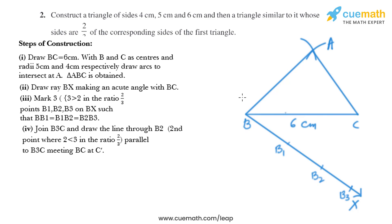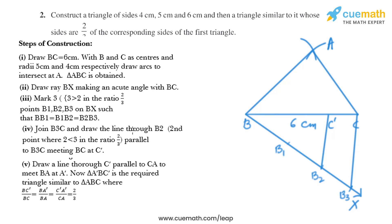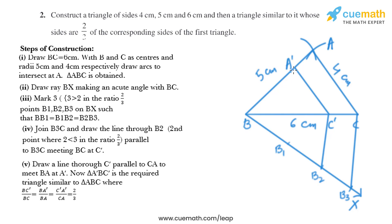Now in the next step, we join B3 to C. Then from C dash, we draw a line parallel to AC and mark the point of intersection. We have AB as 5 centimeter and AC as 4 centimeter. We draw a line parallel to AC and mark the point of intersection as A dash.